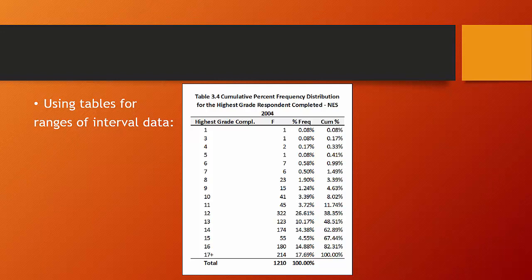the cumulative frequencies, etc. And you can see at various points, by looking at the cumulative frequencies, the relative percentile ranks of the observations up to that point. So for example, 38.35% of our observations have 12 years of education or less.